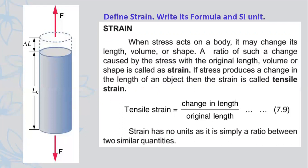Next we have strain. Write question: define strain, write its formula and SI unit. Write heading: definition. When stress acts on a body, meaning a force acts on a unit area, this force may change its length, volume, and shape. The ratio of such a change caused by the stress to the original length, volume, and shape is called strain.